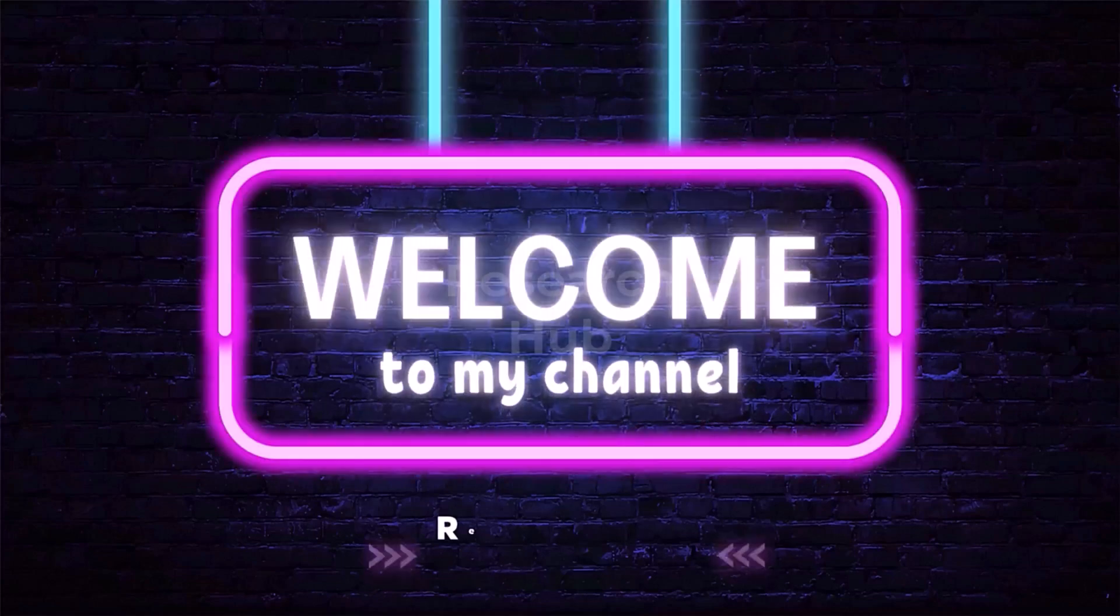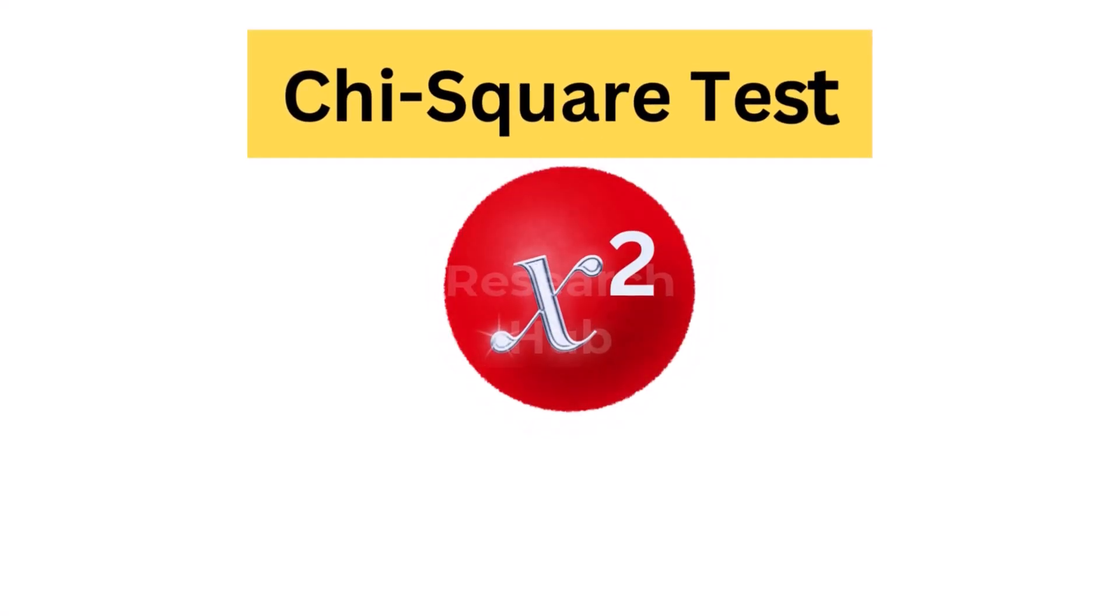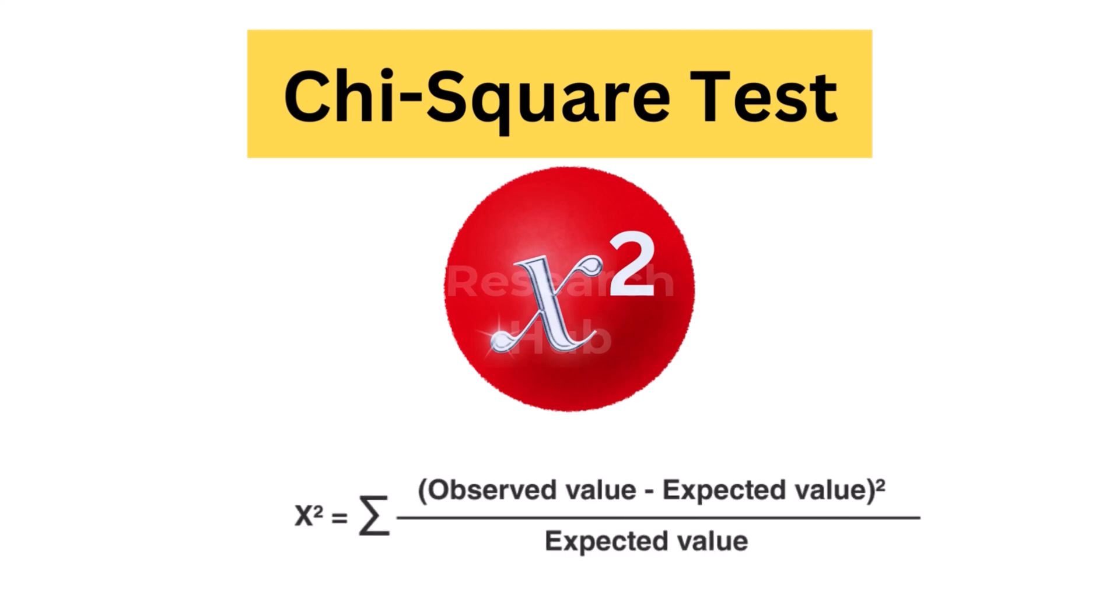Welcome to Research Hub. A chi-squared test, symbolically represented as chi-2, is basically a data analysis on the basis of observations of a random set of variables.